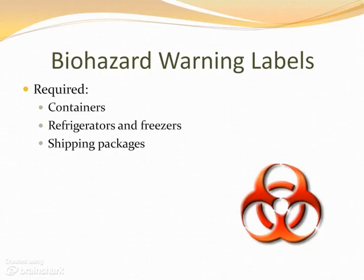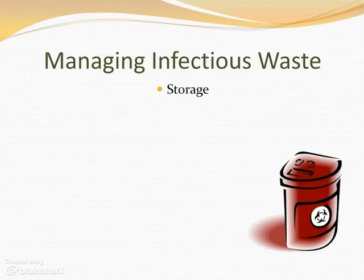Containers with biohazard materials must be labeled with predominantly fluorescent orange or orange-red labels with lettering and symbols in a contrasting color. Labels are required on containers of regulated waste, on refrigerators and freezers containing blood or other potentially infectious materials, and on any containers used to store, transport, or ship such materials. Approved bags or containers may be used instead of labels. Infectious waste must go to a designated area with only controlled access, and red is the primary color for such containers.